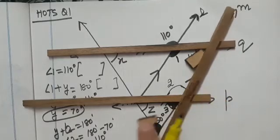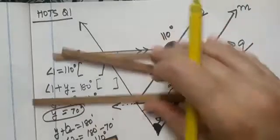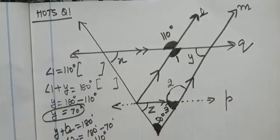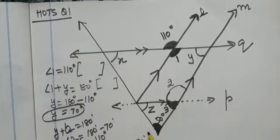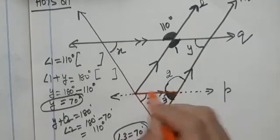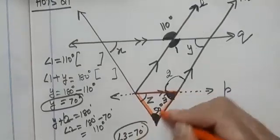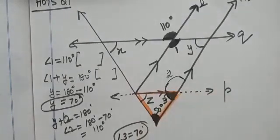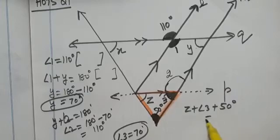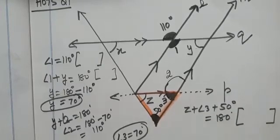So angle 3 comes out to be 70 degrees. So now you observe this triangle. I am talking about this triangle. And in this triangle, you will see that Z plus angle 3 plus 50 degrees will be equal to 180 degrees. Tell me the reason. Angle sum property.